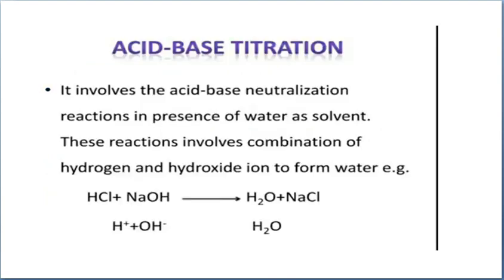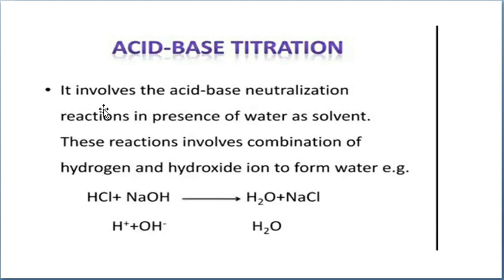First, acid-base titration. Acid-base titration is otherwise known as a neutralization reaction. For example, HCl is an acid and NaOH is a base. The acid and base undergo neutralization to give water (H₂O) plus sodium chloride (NaCl). This is known as a neutralization reaction. Once the reaction gets neutralized, there are no more H⁺ ions and OH⁻ ions present in the solution, because H⁺ reacts with hydroxide ions to form water. It involves combination of H⁺ and hydroxide ions to form water. Acid-base titration is nothing but the neutralization reaction — acid neutralizes with base to form salt plus water.